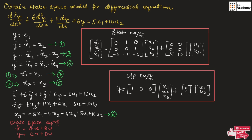Again, let us differentiate equation 2. We get y-triple-dot equal to x1-triple-dot, equal to x2-double-dot, equal to x3-dot. Let us call this equation number 3.